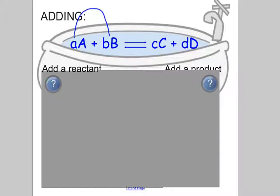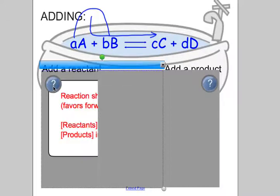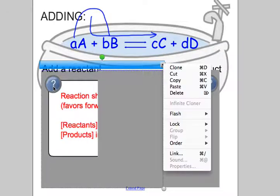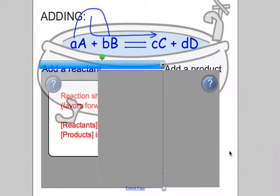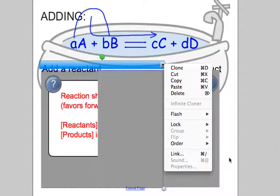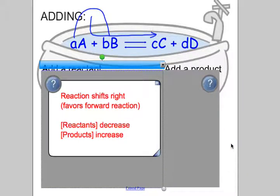The water flows and equalizes. So if I add water to this side of the tub, all the water I've added will rush in one direction until the water level re-levels out. So if I add reactants, the reaction is going to shift to the right — or you could say it favors the forward reaction. Your reactants that you just added are going to speed up and start making more product to reestablish that equilibrium. Therefore, the concentrations of my reactants end up decreasing and my products increase.